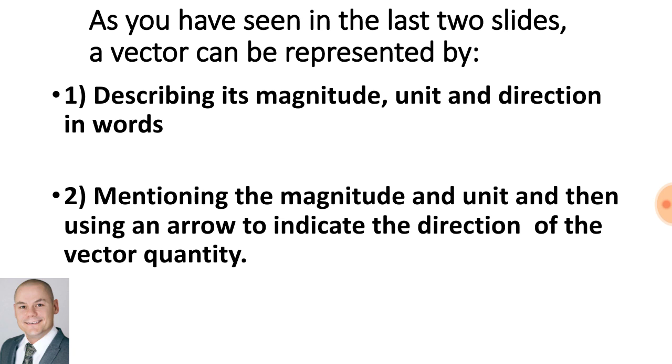As you have seen in the last two slides, a vector can be represented by describing its magnitude, unit, and direction in words. And also by mentioning the magnitude and unit and then using an arrow to indicate the direction of the vector quantity.